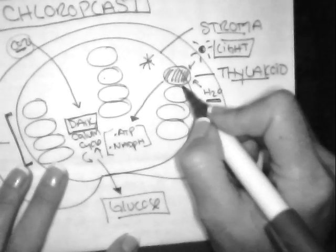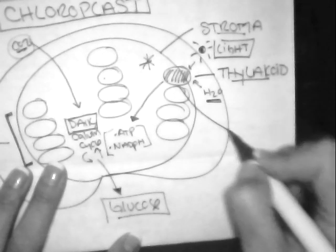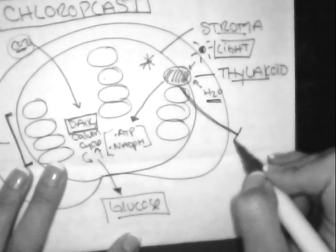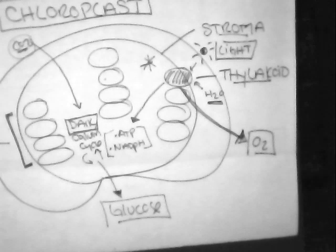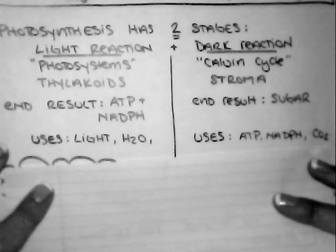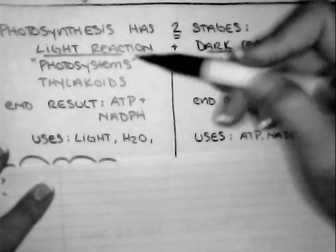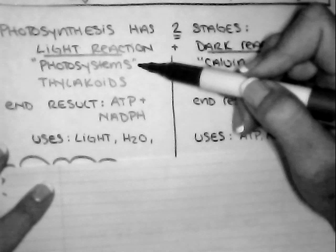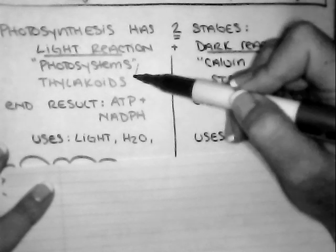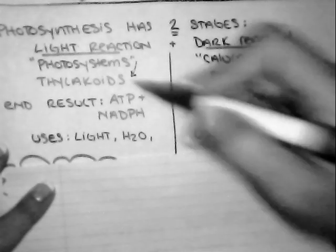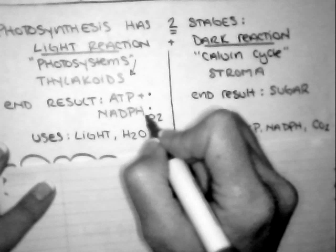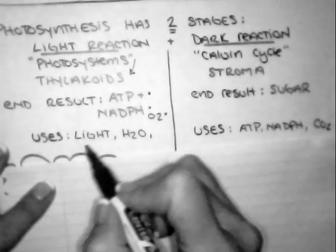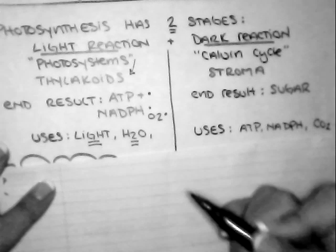Our dark reaction is going to happen inside the stroma and that's where we're going to take our CO2 and we're going to go through this little cycle that's known as the Calvin cycle and this is where we're going to pump out our sugar which is our glucose. Okay, so this is our final product here. Now, the light reaction in turn also has a final product other than the energy. He also will be pumping out a form, a byproduct which is known as oxygen.